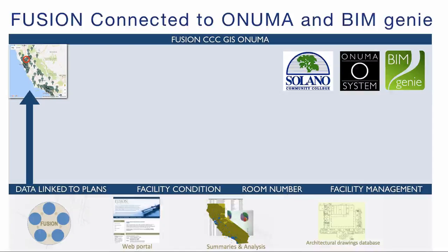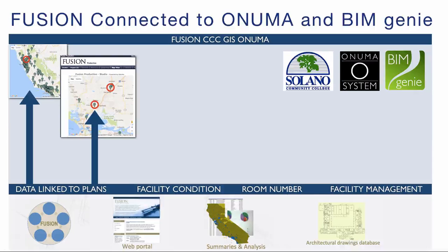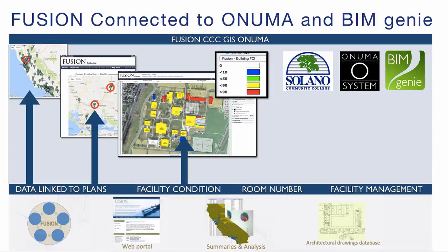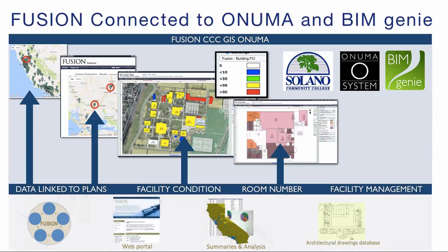The Fusion system driven into ONUMA represents every district at the state level as a dot on a map. With access privileges, clicking on a dot provides additional information. Let's drill down one of the Solano Community Colleges to an individual campus. At the campus level, toggle for information like a facility's condition and continue drilling down to the building level.